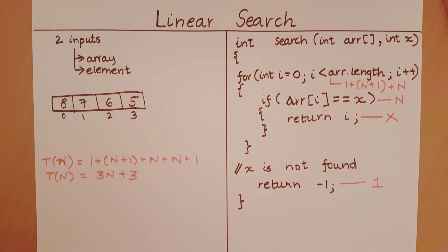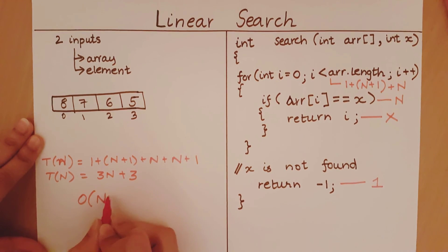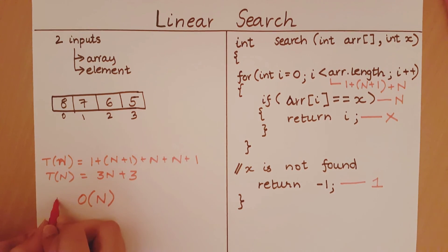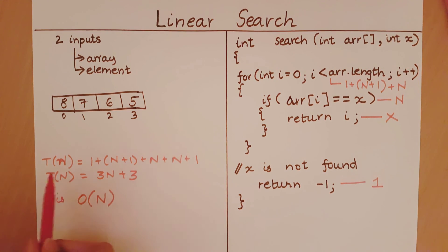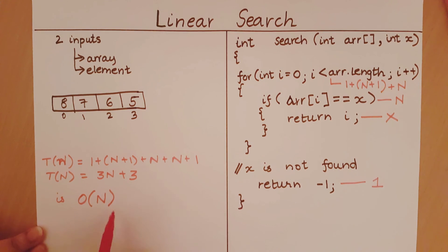When we want to find the Big O notation of linear search, we say that linear search is O(N). We take the most dominant term in the worst-case time expression, which affects the growth of the algorithm. Applying the same concepts discussed in previous videos, we can quickly say that this algorithm takes O(N) time.